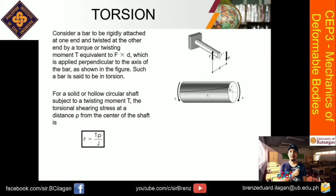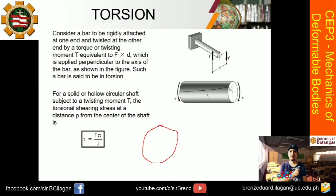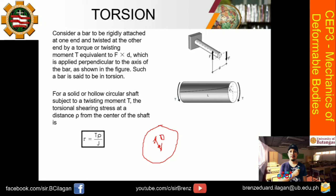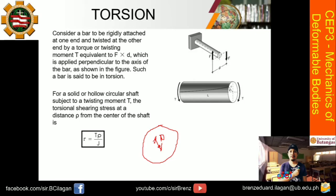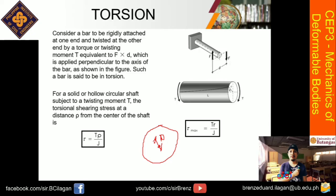To understand this better, consider a circular bar — rho can be any distance from the center, whether at one-quarter, three-quarters, etc., depending on what the problem asks. If you are solving for the maximum torsional shearing stress, rho is simply replaced by the radius r, giving you the maximum shearing stress equation.